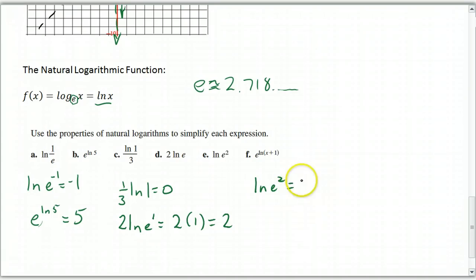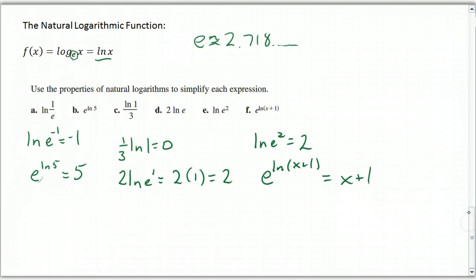Natural log of E squared is 2. And E raised to the natural log of X plus 1 is X plus 1. And that's pretty much what you need to know about logarithms.